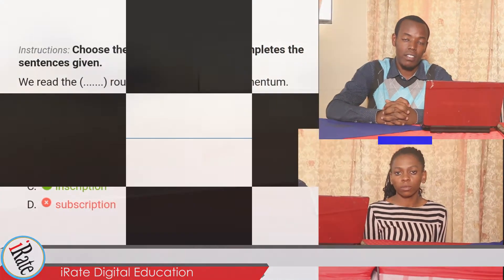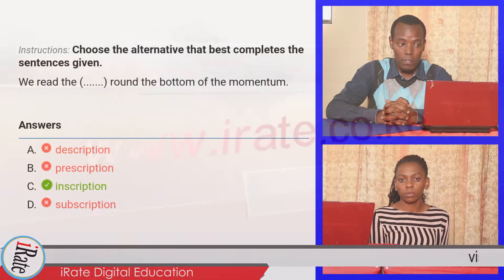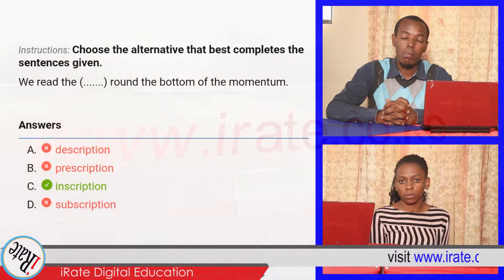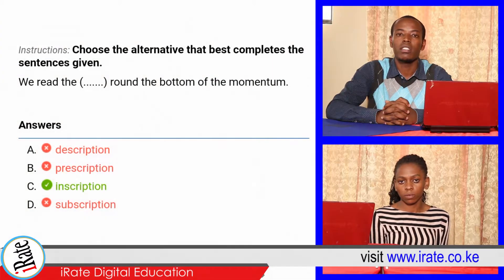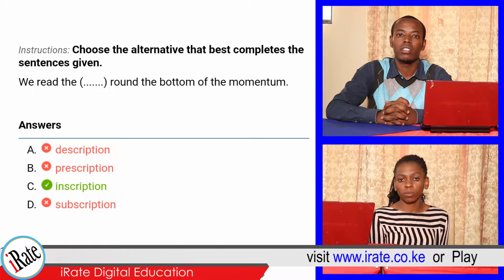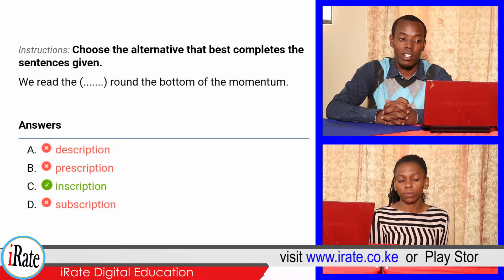Choose the alternative that best completes the given statement. We read the dash around the bottom of the monument. The answer is inscription. That is correct.